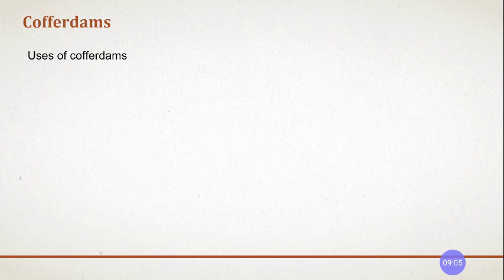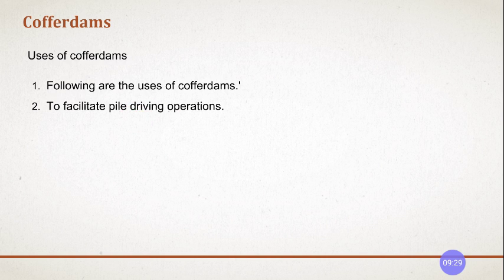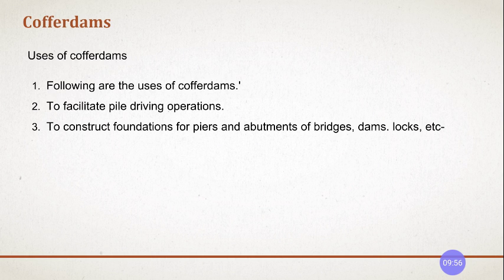Where do we use cofferdams? It is not only used to obstruct or prevent water from entering, but also for obstruction of earth. First, to facilitate pile drilling operations — when we want to drive piles into the foundation underwater, we can't determine exact topography and locations. So first we remove the water using a cofferdam, and then the exact locations of pile drilling operations can be started. Second, to construct the foundations of piers, abutments of bridges, dams, and locks.